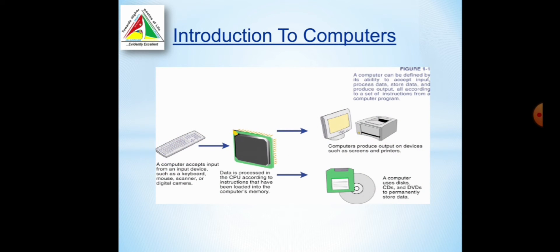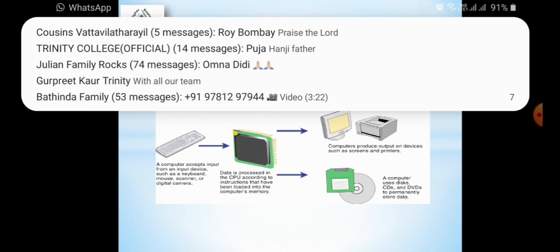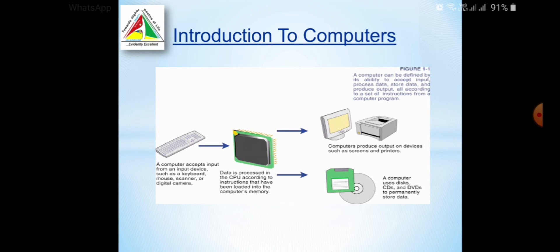This is the picture we are showing. We give input to the computer through the keyboard, mouse, such devices. Then, CPU is the place where the actual processing happens. After processing the data, it can be sent to the storage device or to the output device.